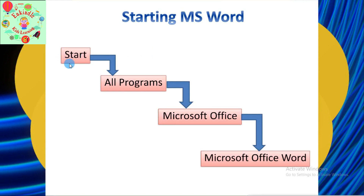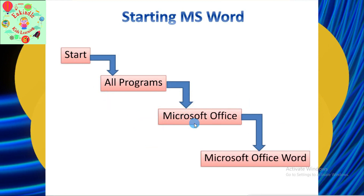Now let's see how to start MS Word. First, you will have to click on the Start button, then click on All Programs. Under All Programs you will get the Microsoft Office folder, and from this folder you will have to click on Microsoft Office Word.